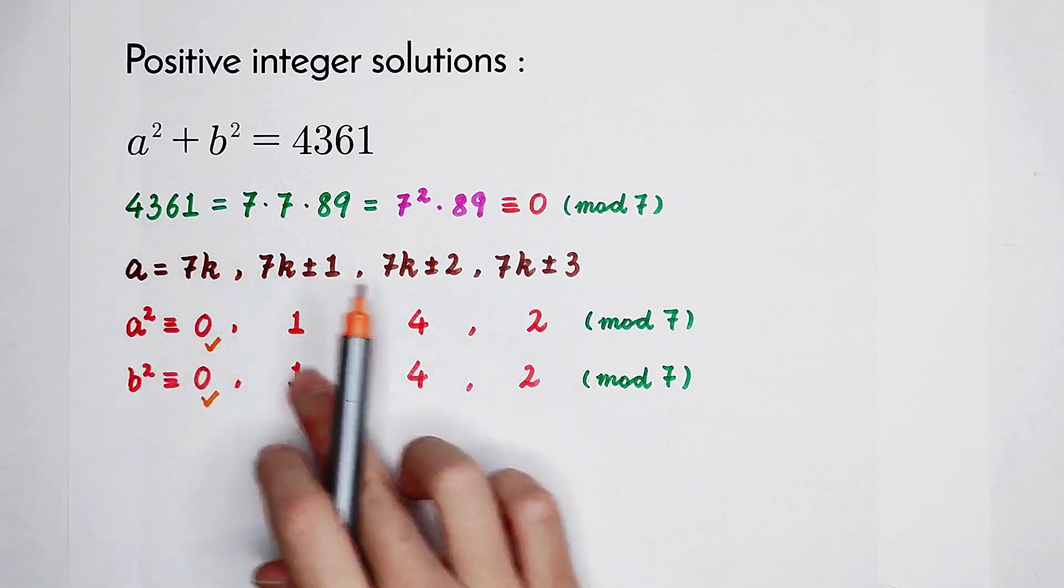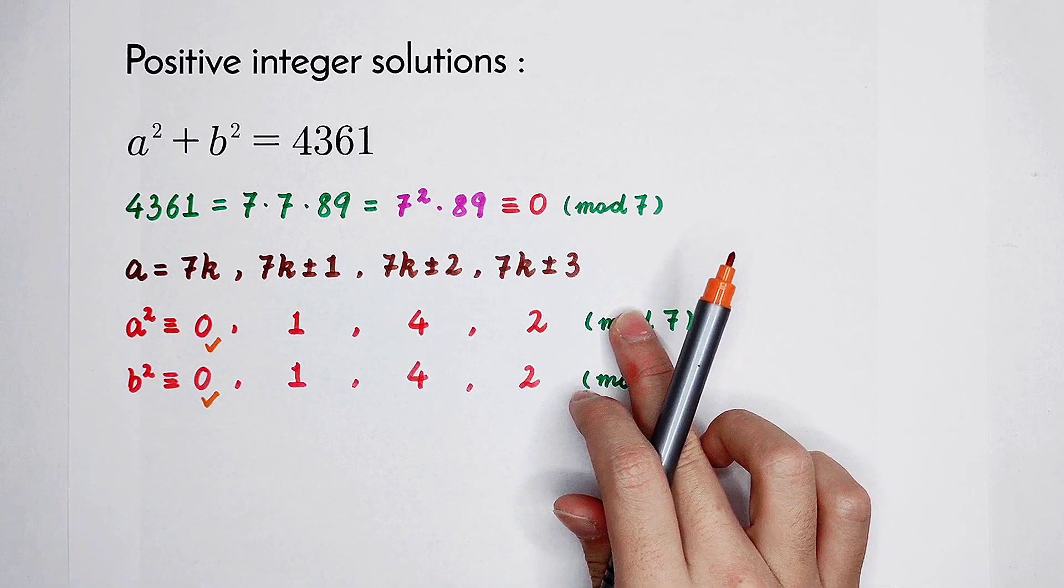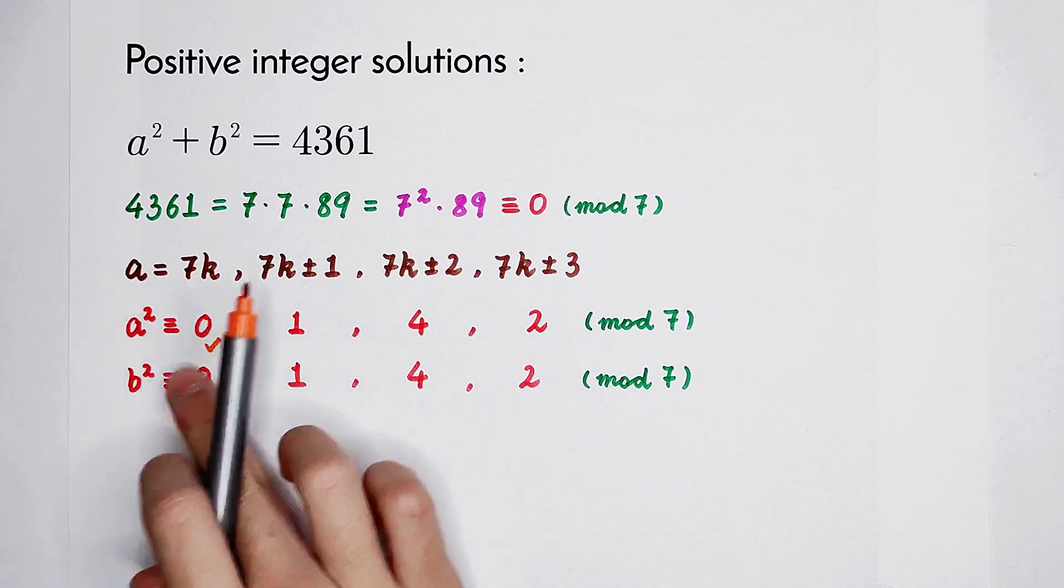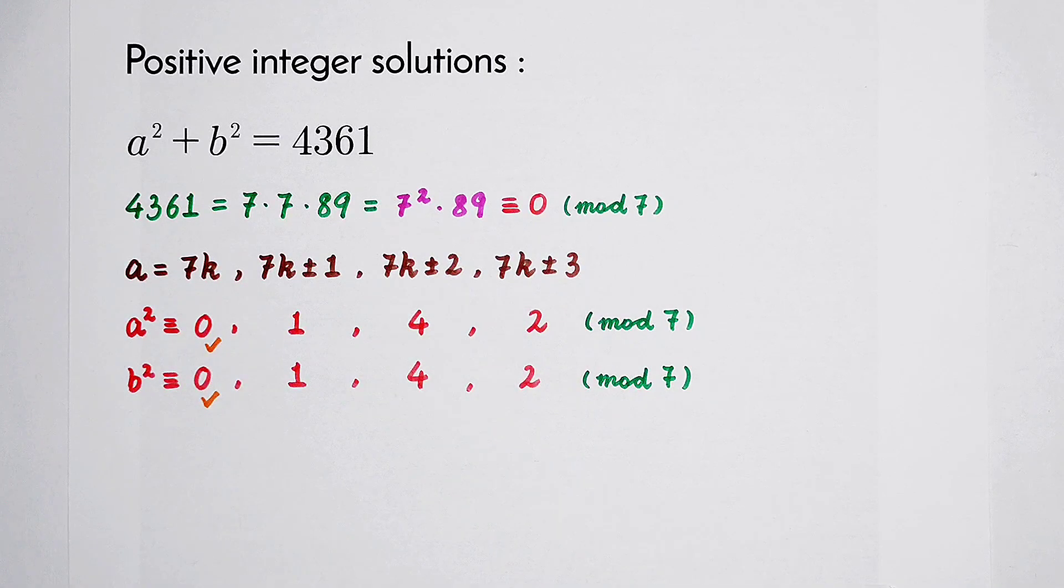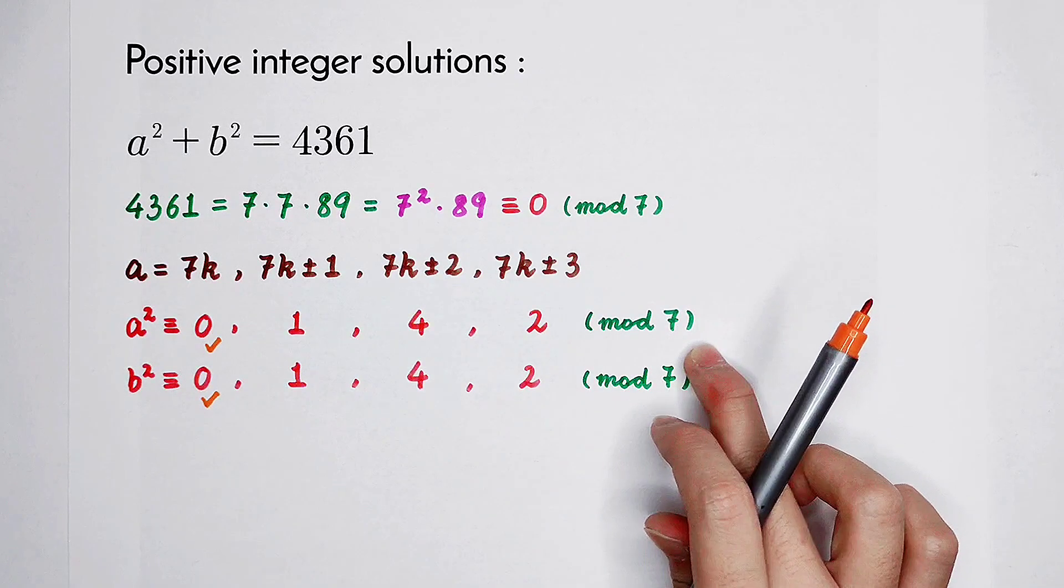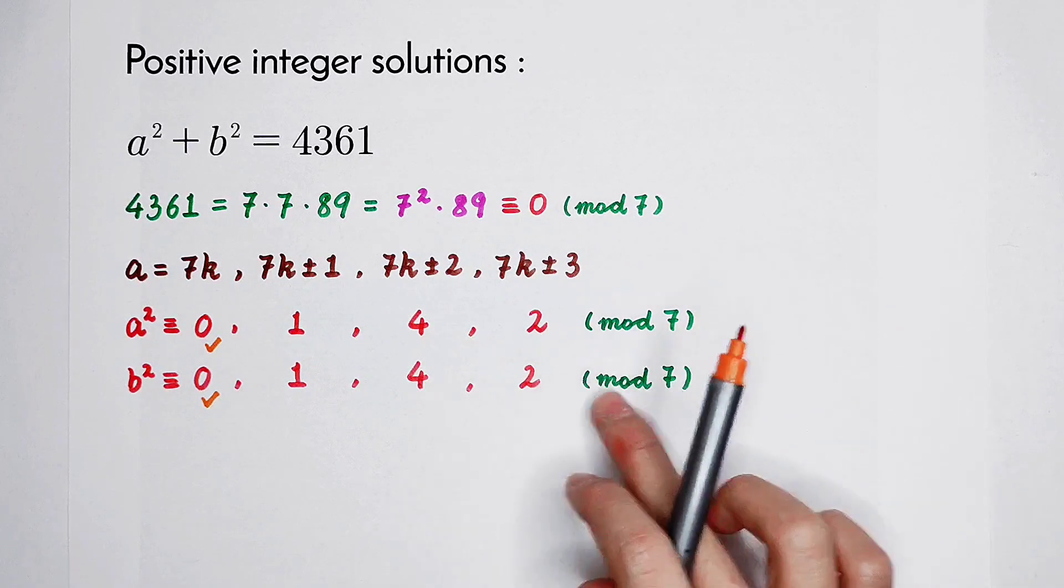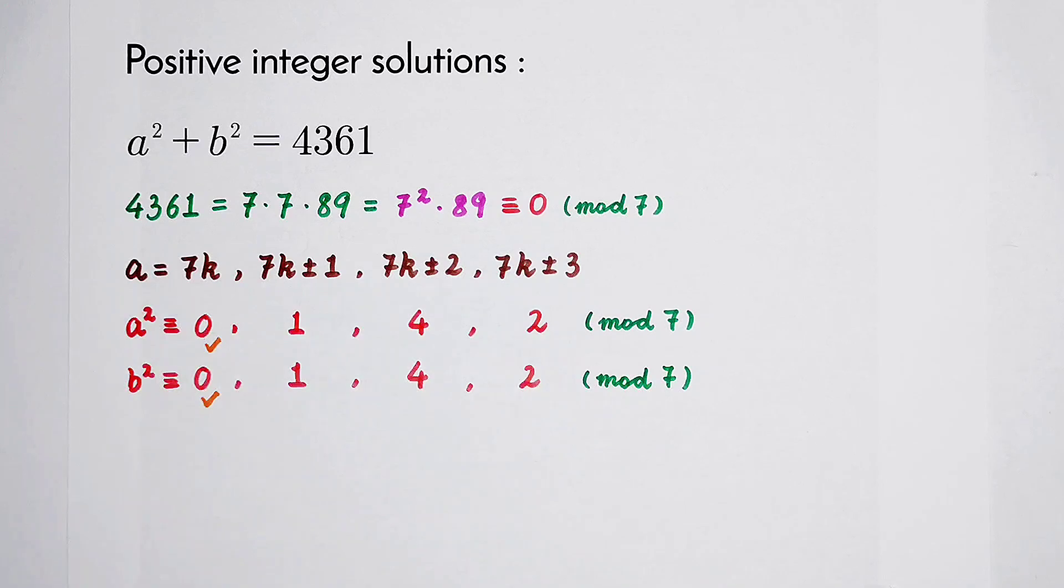If a squared is congruent to 4 mod 7, then b squared should be congruent to 3 mod 7, but there is no 3. If a squared is congruent to 2 mod 7, then b squared should be congruent to 5 mod 7, but there is no 5. So we got that a and b both should be multiples of 7.